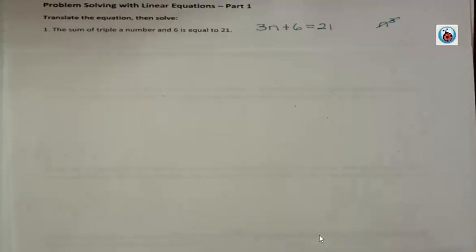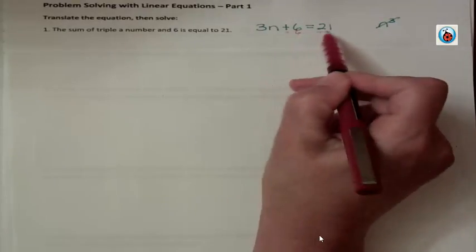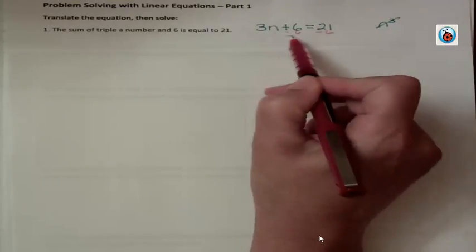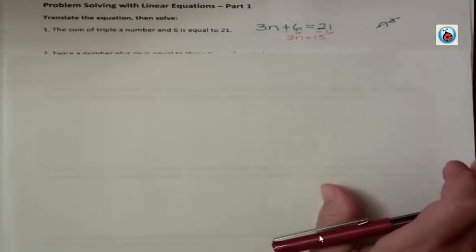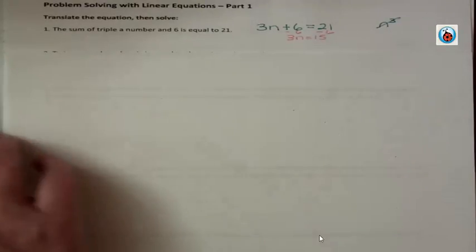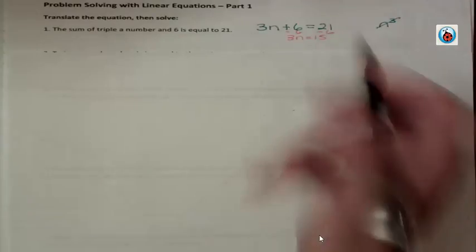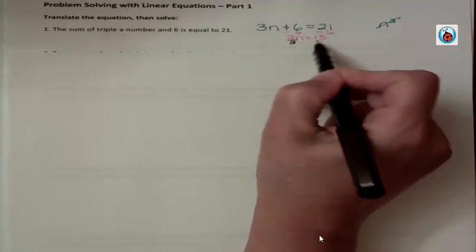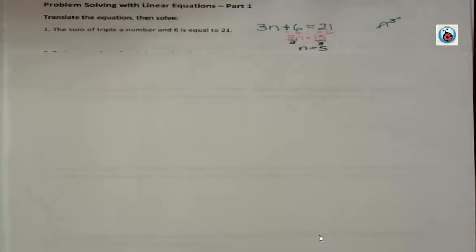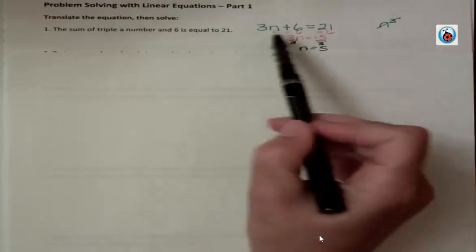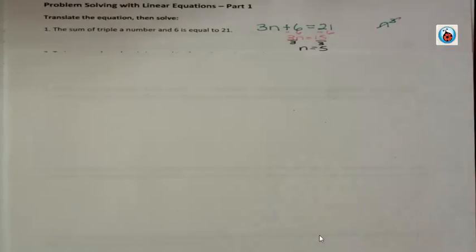Let's get the n by itself by subtracting 6 from both sides. Then we'd have 3n equals 15. And then all we have to do is get rid of that coefficient 3 by dividing both sides by 3, and n equals 5. Now be careful because a lot of times when you're working on a computerized program, they'd ask you to do both things, set up the equation and solve it. So your first answer is the equation, and the second one is the number as you solve it.